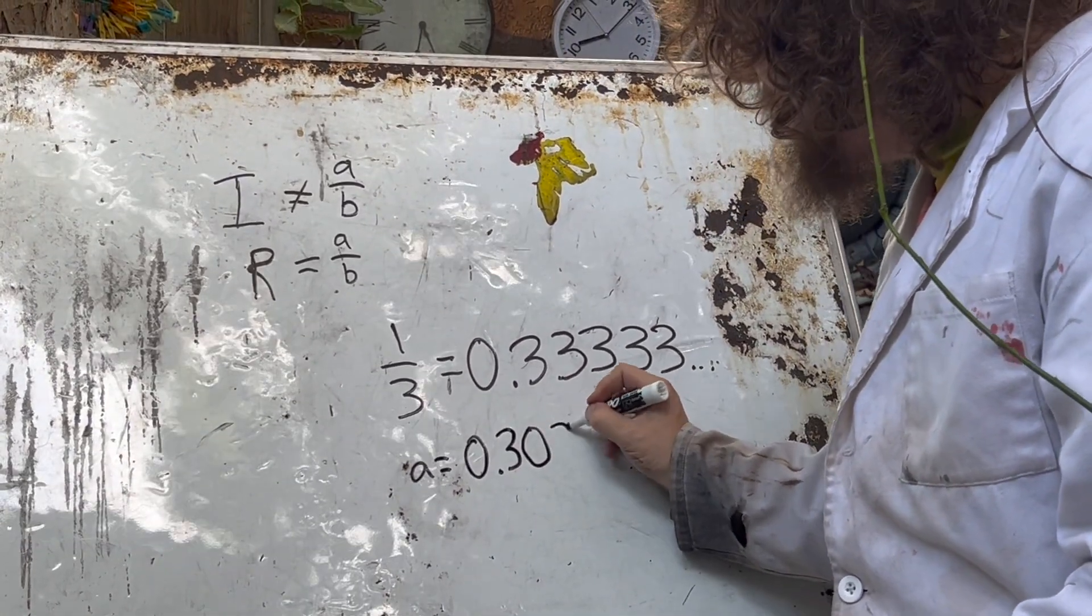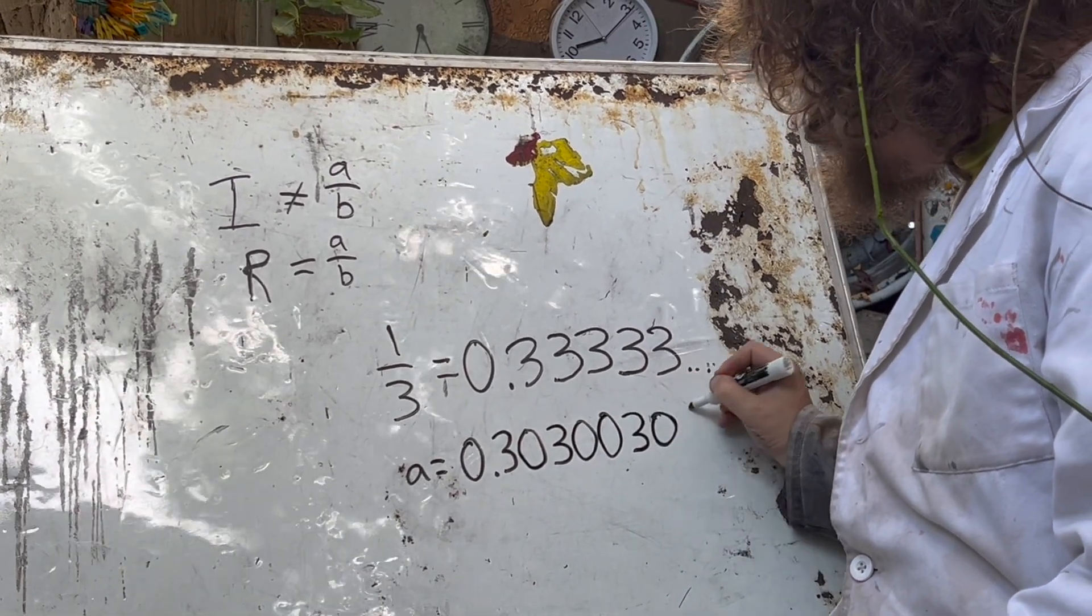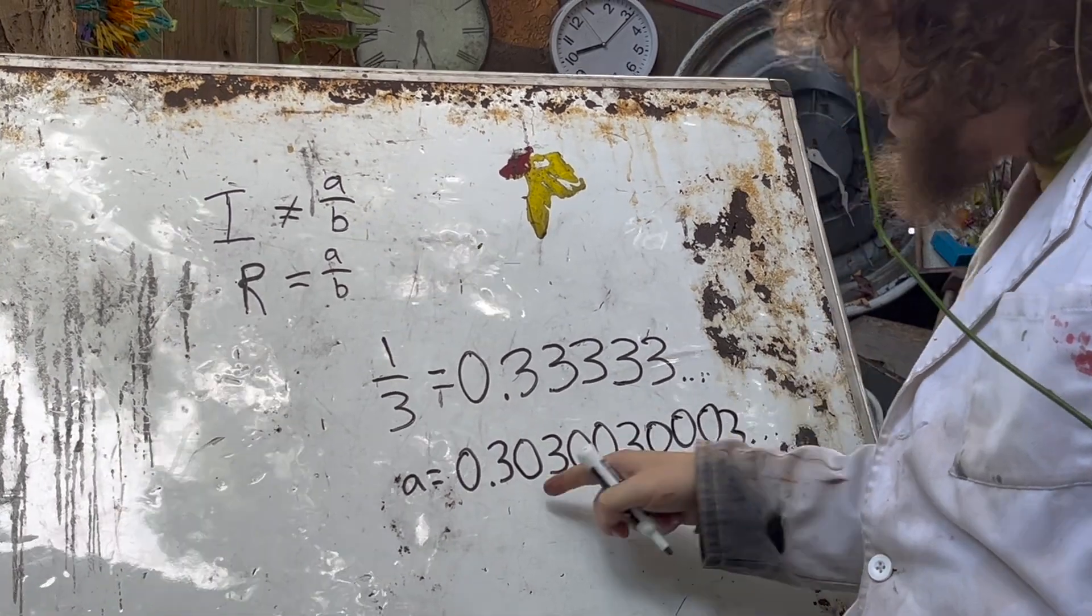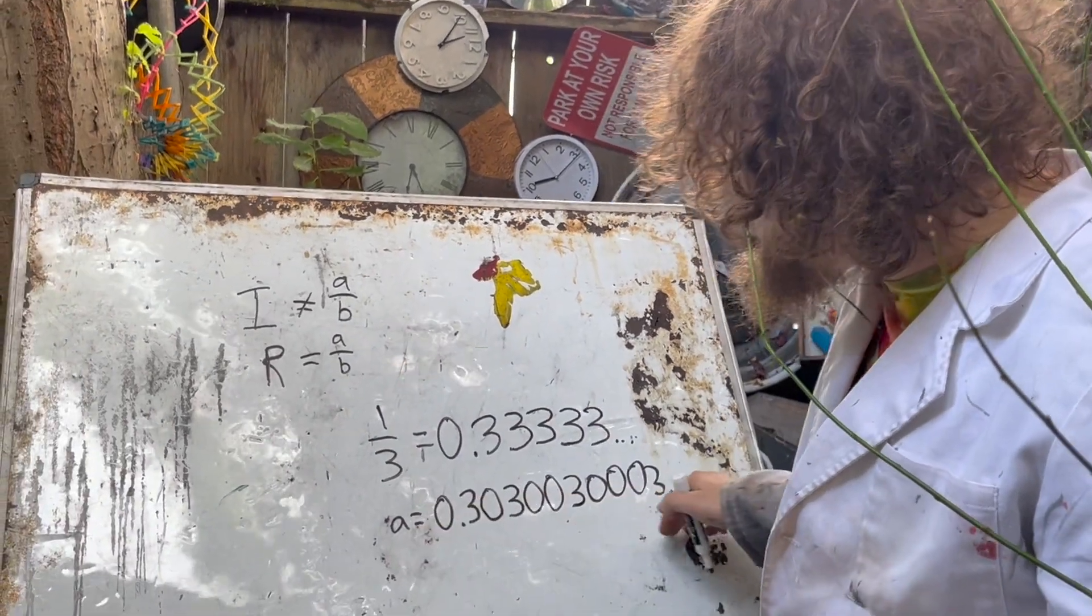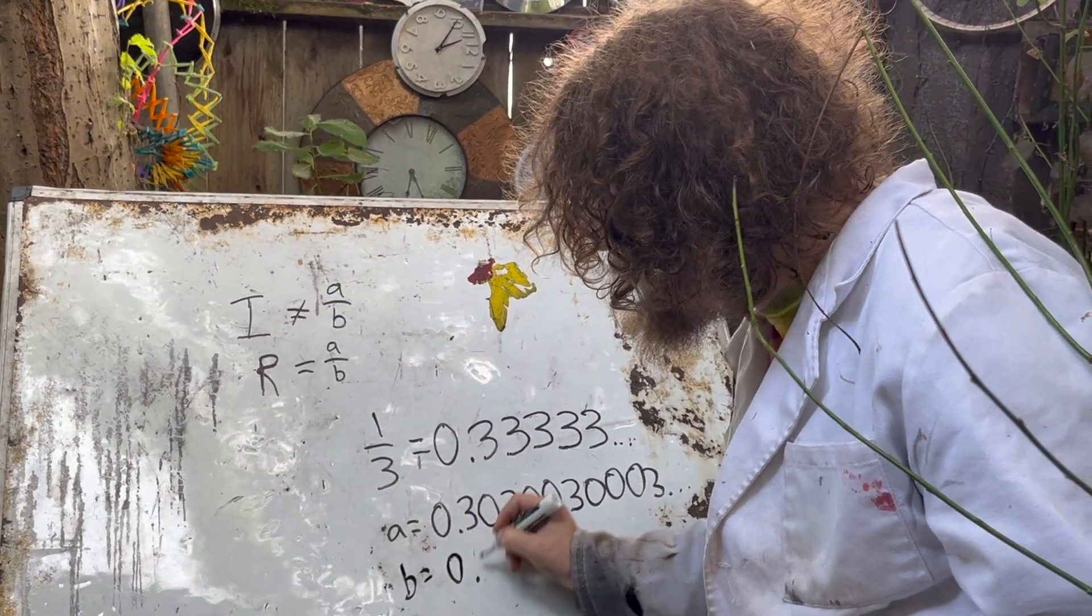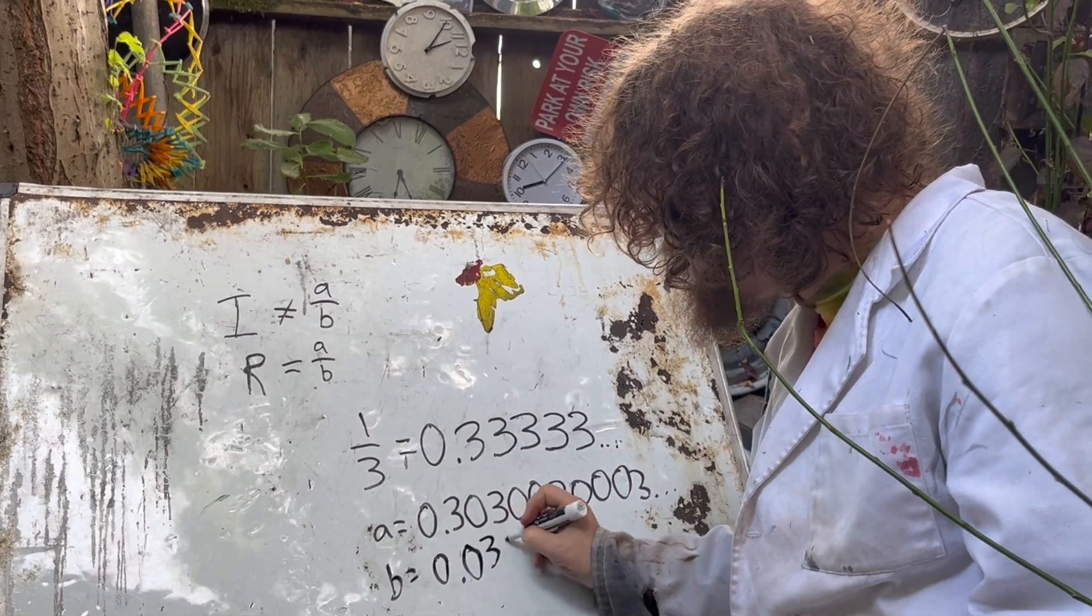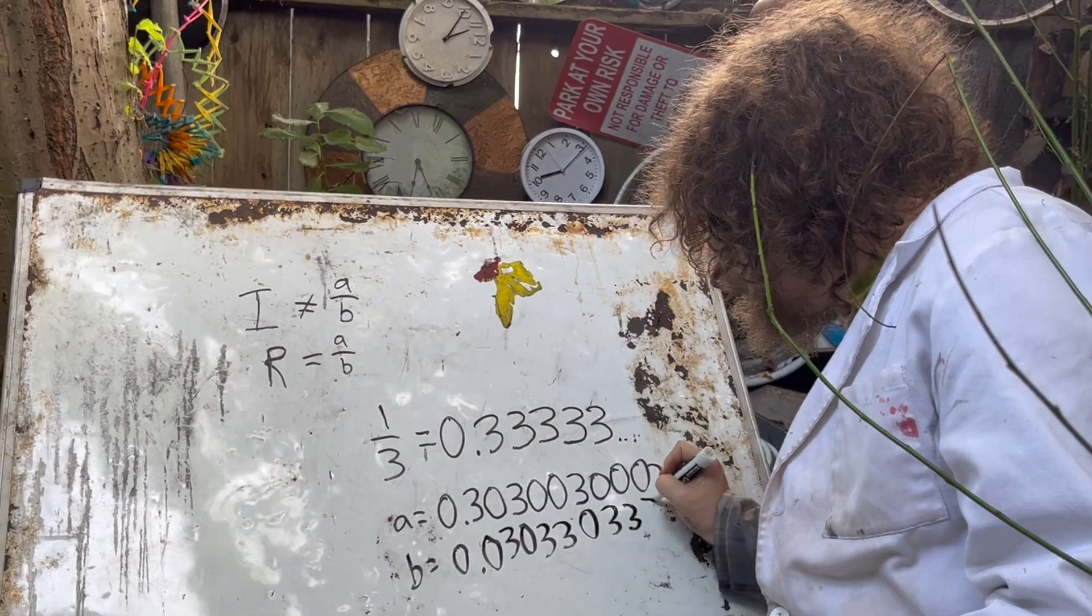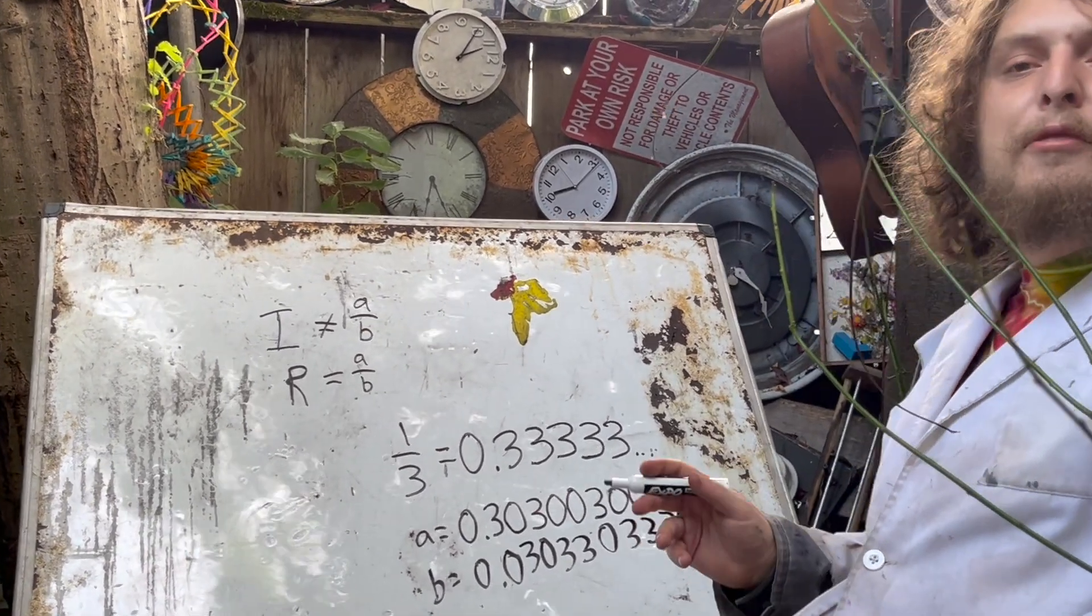Like if I make a 0.3, and then one zero, three, and then two zeros, three, and then three zeros, and et cetera, that has a pattern that never repeats periodically. And so we know that must be irrational. And I can create a B that will also be irrational by filling in those gaps, putting zeros where we had threes, and threes where we had zeros. And these two numbers are both irrational, but they will add up to one third.